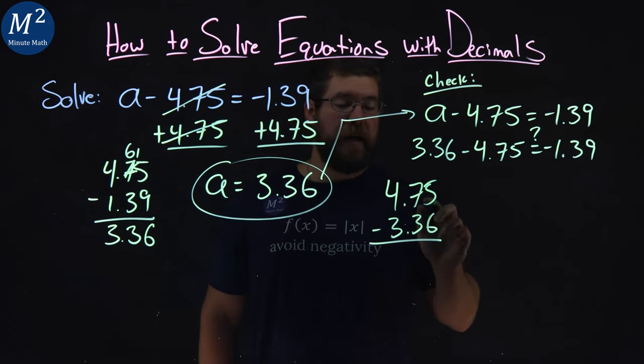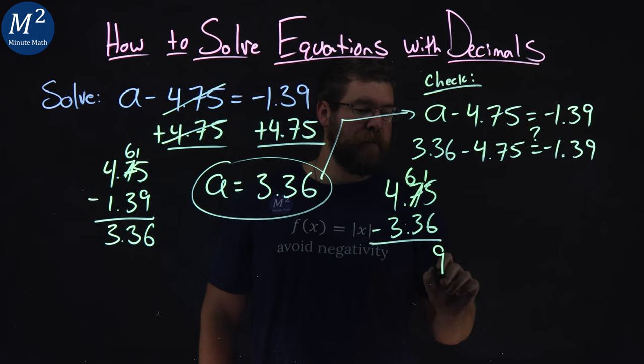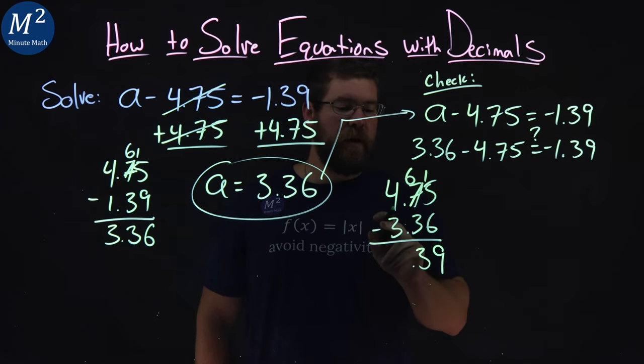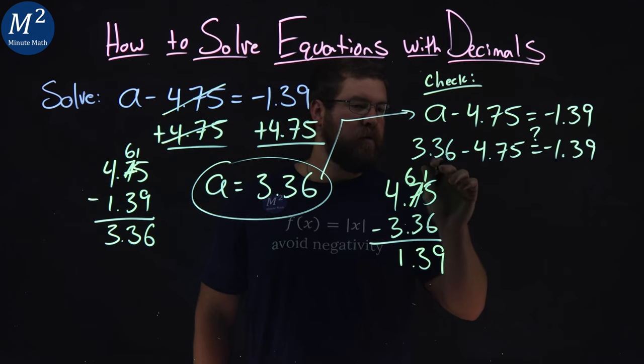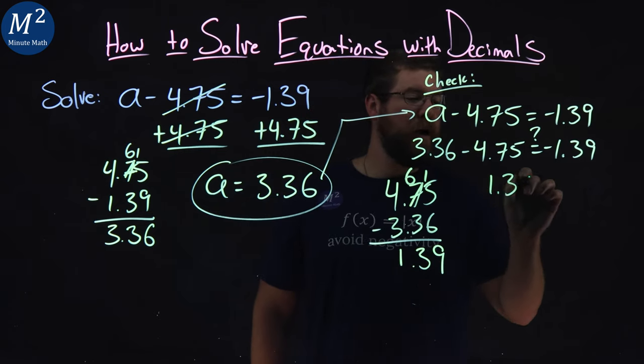5 minus 6, we cannot do. We've got to borrow from the 7. 7 becomes a 6, carry the 1. 15 minus 6 is 9. 6 minus 3 is 3. And, 4 minus 3 is 1. So, 3.36 minus 4.75 is 1.39.